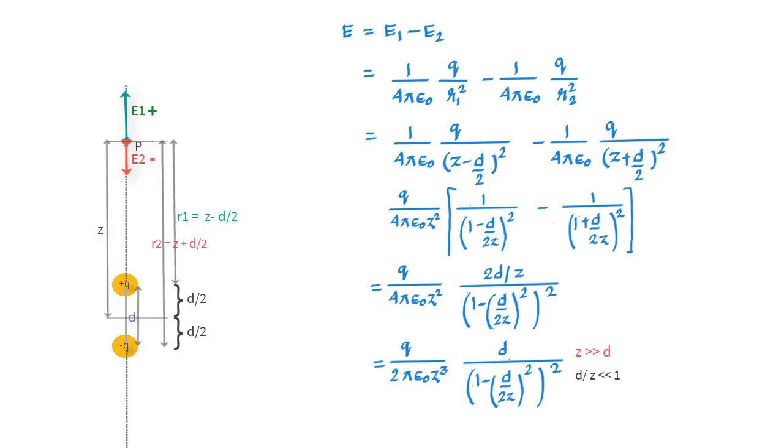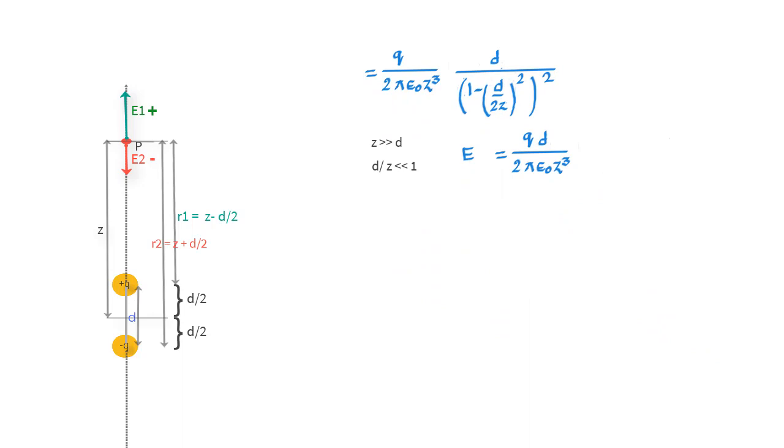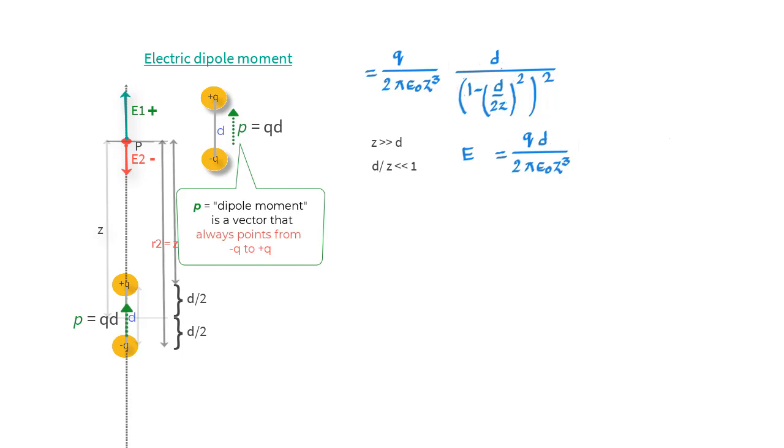The equation changes to a very simple expression: E equals 1 over 2π epsilon naught qd over z cubed. This product qd combines the two intrinsic properties of a dipole—charge q and separation d—and is famously termed as the electric dipole moment of the dipole. It is a vector quantity with qd being its value, and if you see these figures and field lines, the direction of net E for any distant point on the axis will always be the direction of the dipole moment vector.